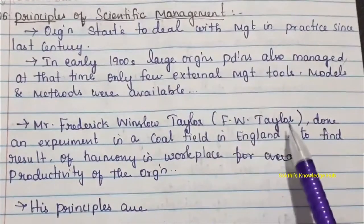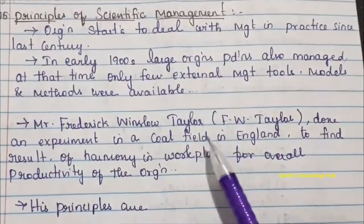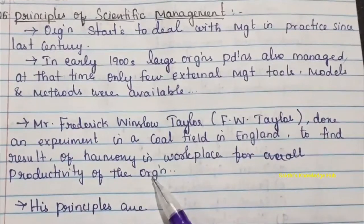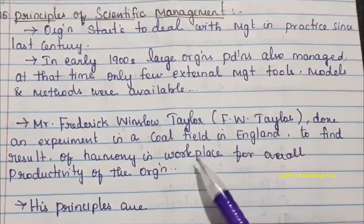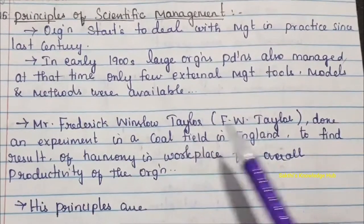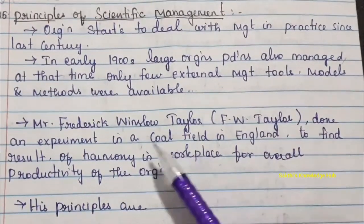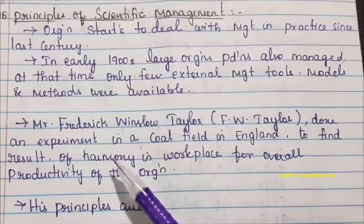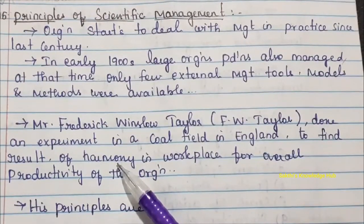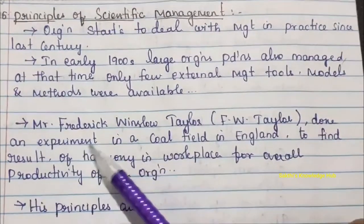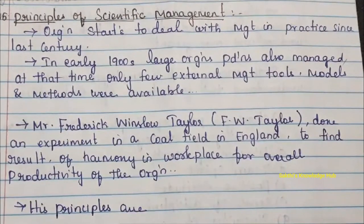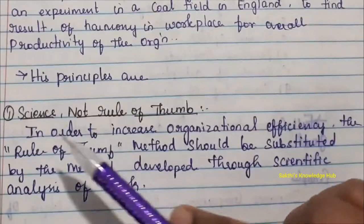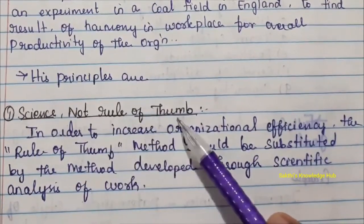FW Taylor conducted an experiment in a coal field in England to find the result of harmony in the workplace for the overall productivity of the organization. He researched how productivity increases through harmony and positivity in the workplace. Based on that experiment, he came up with the principles of scientific management. The first principle is: Science, not rule of thumb.